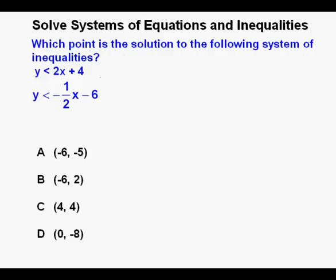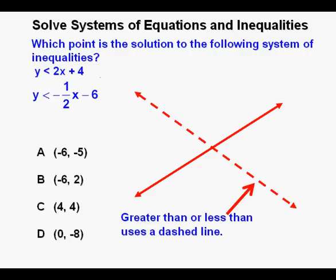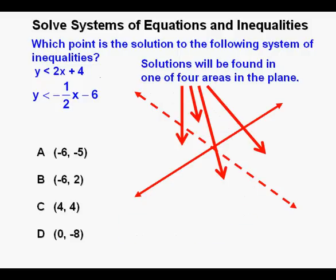Which point is the solution to the following system of inequalities? We have y is less than 2x plus 4 and also y is less than negative one-half x minus 6. Perhaps you noticed similarities to the last problem — the numbers and letters are the same but they are inequalities and not equations. For inequalities we don't use lines to see where they intersect, but use lines as boundary lines or borders. A dashed line indicates a greater than or less than inequality, whereas a greater than or equal to or less than or equal to inequality uses a solid line. The solutions will be found in one of the four sections of the graph created by the crossing of the two boundary lines.